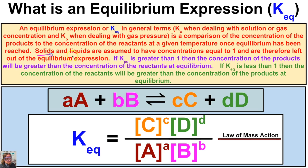Solids and liquids are assumed to have concentrations equal to one and are therefore left out of our equilibrium expression. If Keq is greater than one, then the concentration of the products will be greater than the concentration of the reactants at equilibrium. And if Keq is less than one, then the concentration of the reactants will be greater than the concentration of the products.